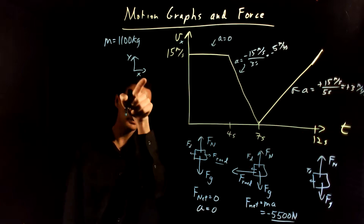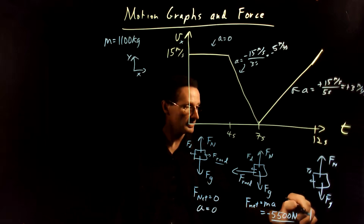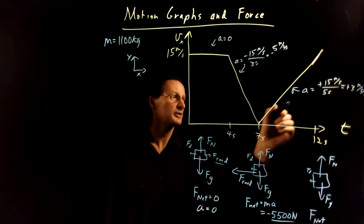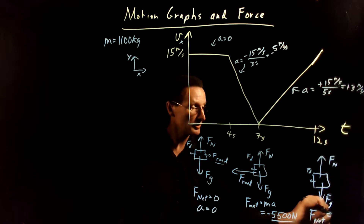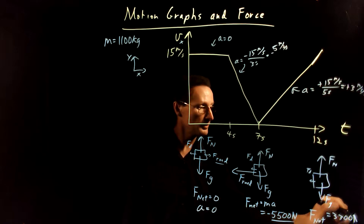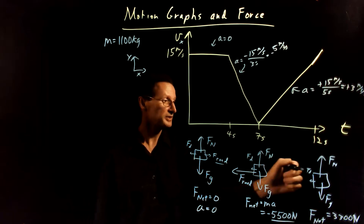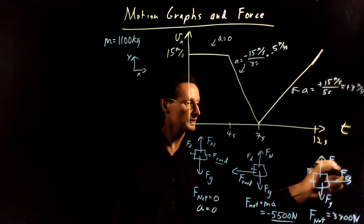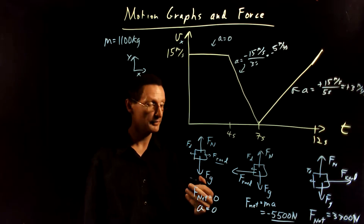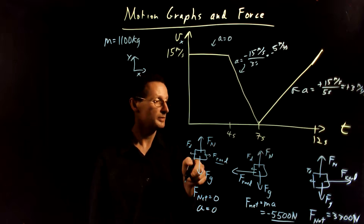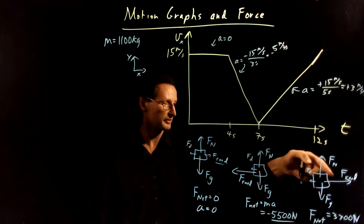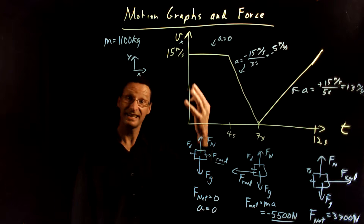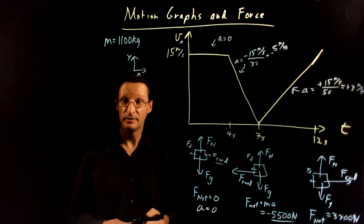The acceleration is in the positive x direction. Our net force is MA: M is 1,100 kilograms, A is 3 meters per second squared — so this is going to be a positive 3,300 newtons in the x direction. That means I need a road force — a propelling force from the interface of the road and tires — of more than positive 3,300 newtons so that the net force is 3,300 newtons. Hopefully this helps you understand the connections between motion graphs and Newton's second law.